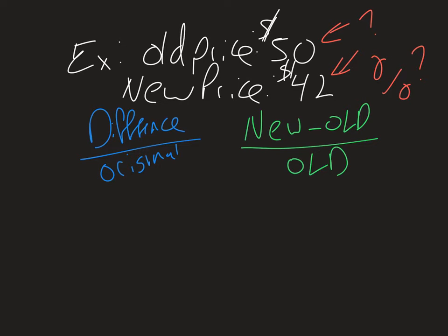So in this case our new price divided by our old, or minus our old price, divided by our old price. And this will give us our percentage as a decimal.